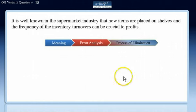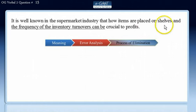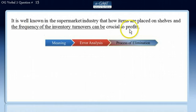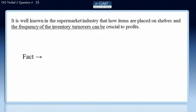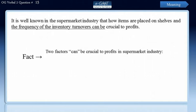So let's begin. It is well known in the supermarket industry that how items are placed on shelves and the frequency of the inventory turnovers can be crucial to profits. This sentence presents a fact about the supermarket industry — it says that two factors can be crucial to its profits: how items are placed on shelves, and the frequency of the inventory turnovers.